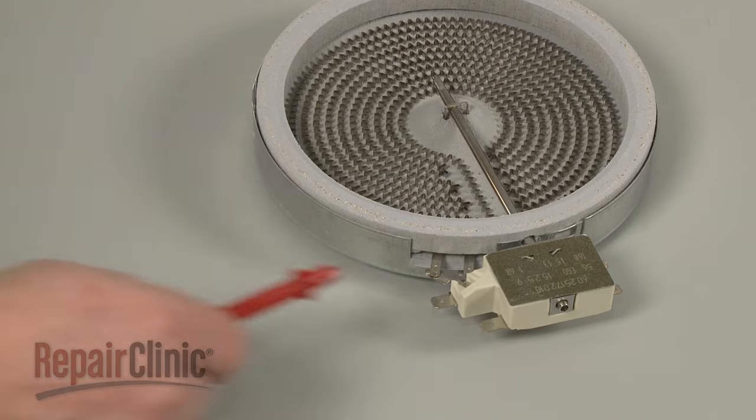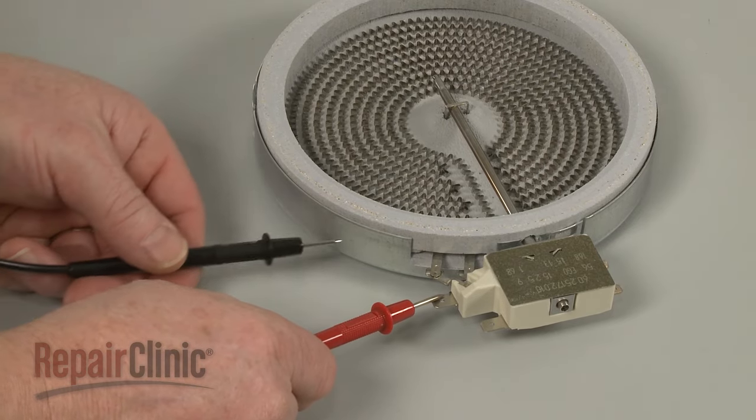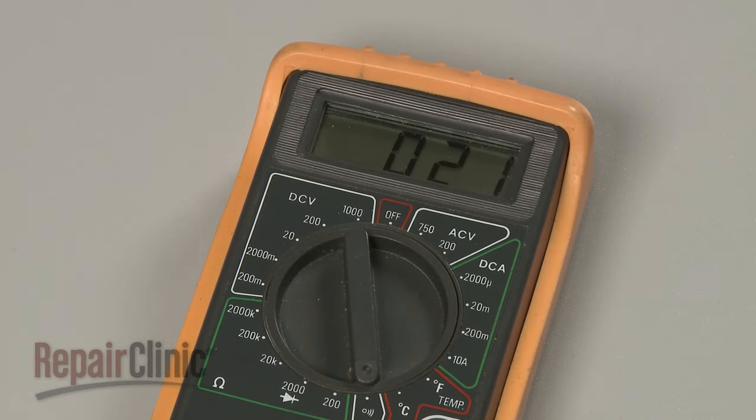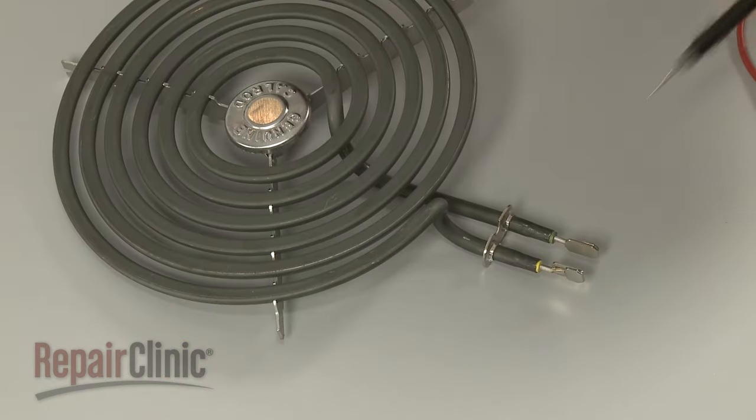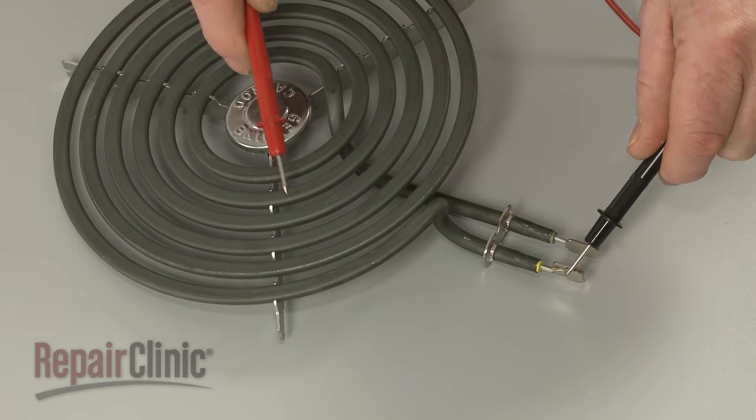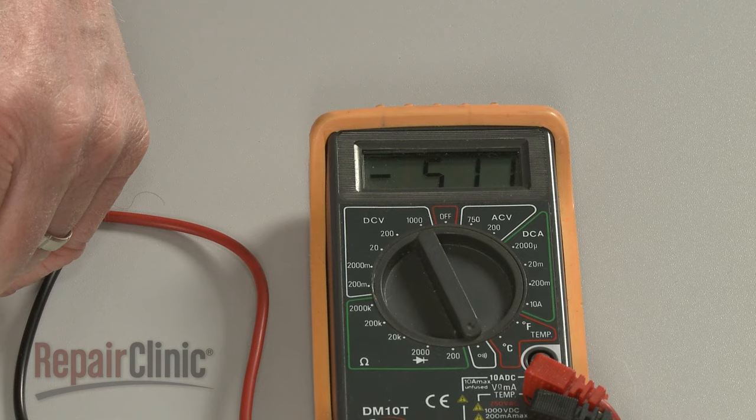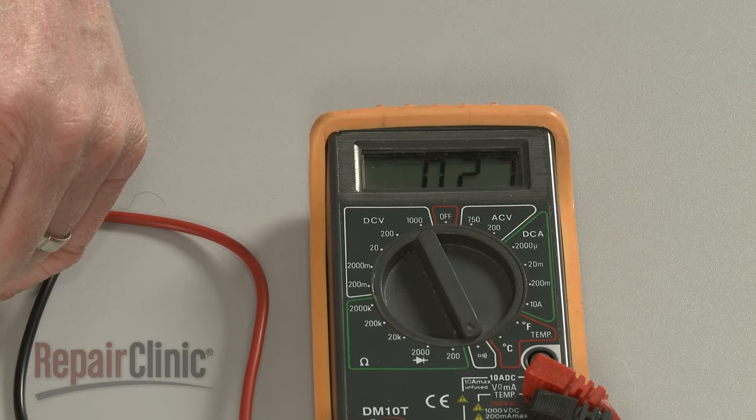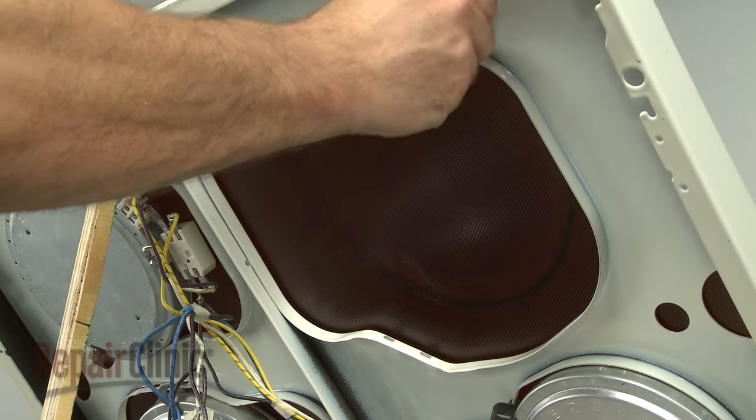Although it's uncommon, if a smooth top radiant coil shows electrical continuity between the terminals and the case, or a conventional coil element shows continuity between the terminals and the insulated coil surface, then it's likely that the element has shorted out and will need to be replaced.